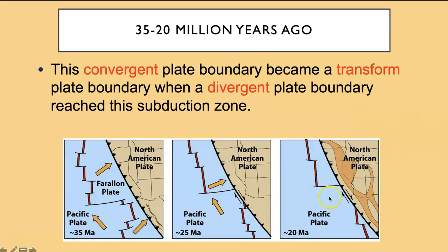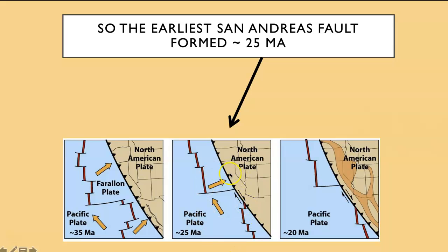You'll also notice in this picture that California and Nevada look kind of squished in these early pictures. That's because it isn't until about 20 million years ago that this region started to stretch and extend. The dark orange you see represents regions where the crust was being pulled apart in an east-west direction. Is this related to the spreading center that got subducted? Possibly — we're not completely sure. But we do know this is the order of events. You can think of the picture at 25 million years ago as the beginning of the San Andreas Fault transform boundary.